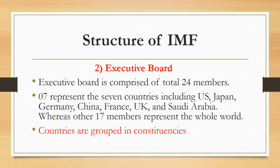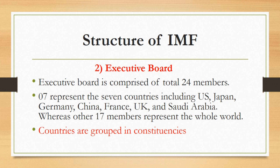The second body of IMF is the Executive Board, which is comprised of 24 members representing all 189 members of IMF. Out of the 24 total board members, 7 represent the 7 countries individually: the US, Japan, Germany, China, France, UK, and Saudi Arabia. The other 17 members represent the rest of the world — all countries other than those 7 are grouped into constituencies such as Australian, Indian Ocean, etc. — and every constituency has one member in the Executive Board.